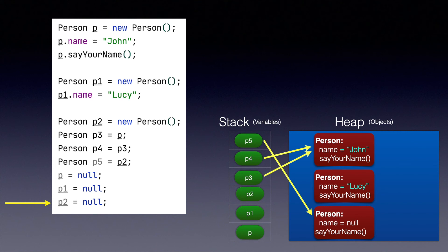So they are not two different objects — they are the same object. When we do changes using one variable, the same changes are visible by the second variable. This is why in Java we call it call by reference, which means that we use the reference to change the object.